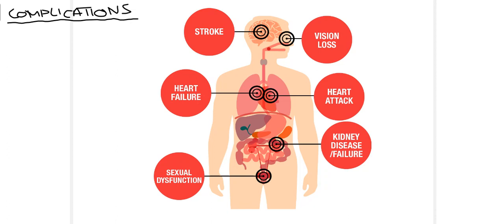Since the kidney has a major role in controlling blood pressure, uncontrolled hypertension can ultimately lead to kidney disease and kidney failure. It is therefore really important for patients with hypertension to have proper management of their blood pressure in order to avoid these high-risk and potentially fatal complications.